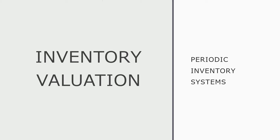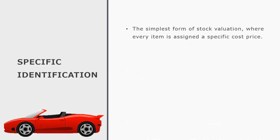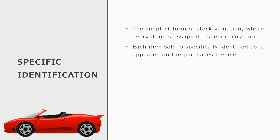Good morning, Grade 12. The last inventory valuation system that we are looking at today is called the Specific Identification Method. This is the simplest form of stock valuation, where every single individual item is assigned a specific cost price. Each item sold is specifically identified as it appears on the purchasing invoice. When we purchase the item in whichever month, we purchase it at a specific unit price, and that is the unit price we are going to use to value each individual item.